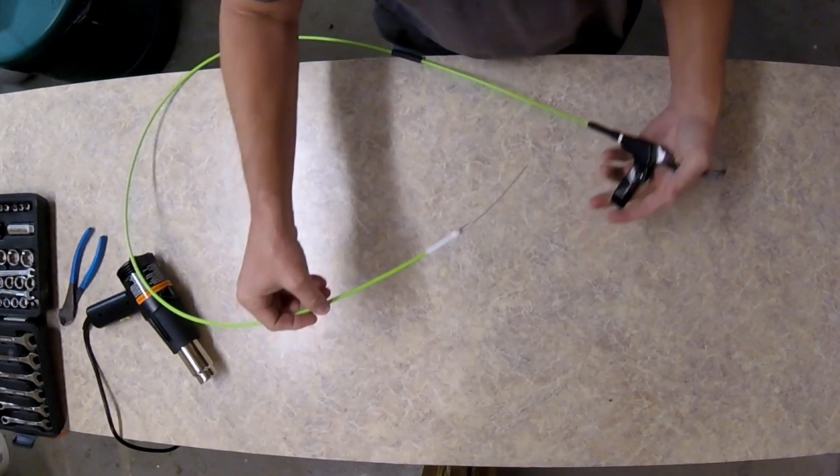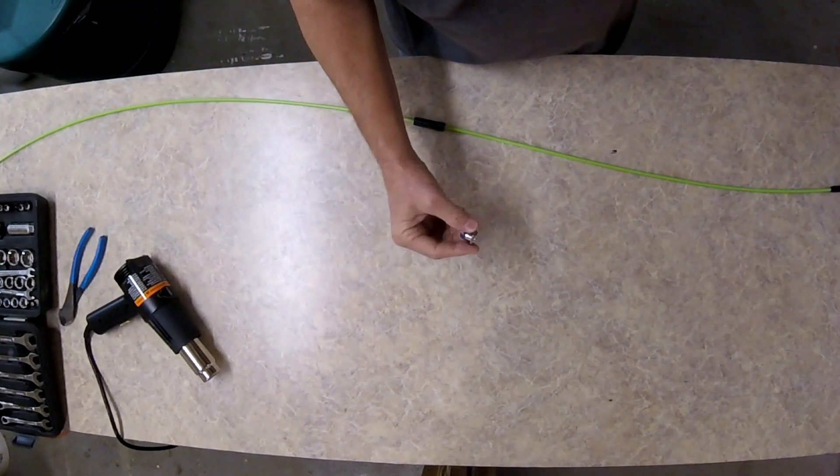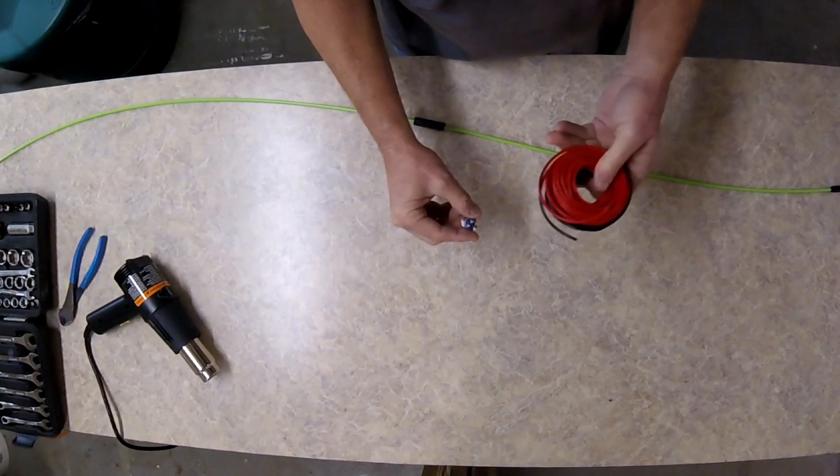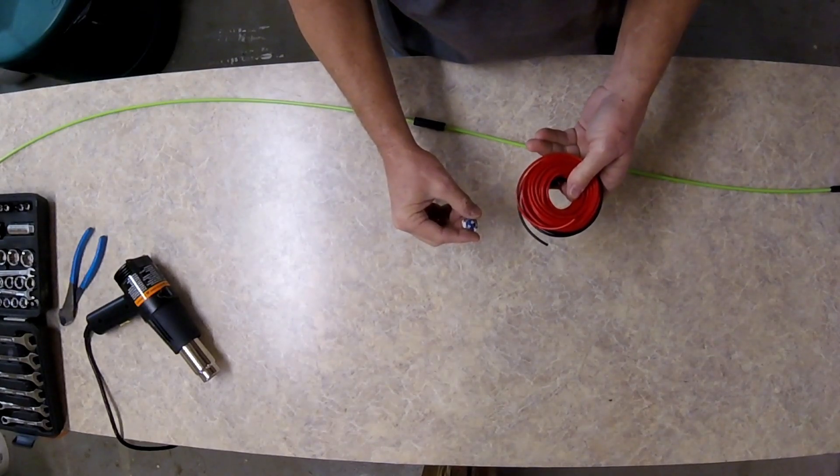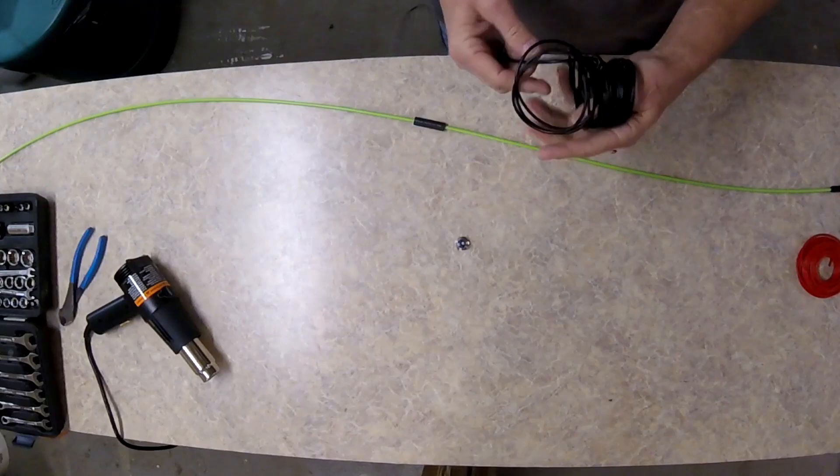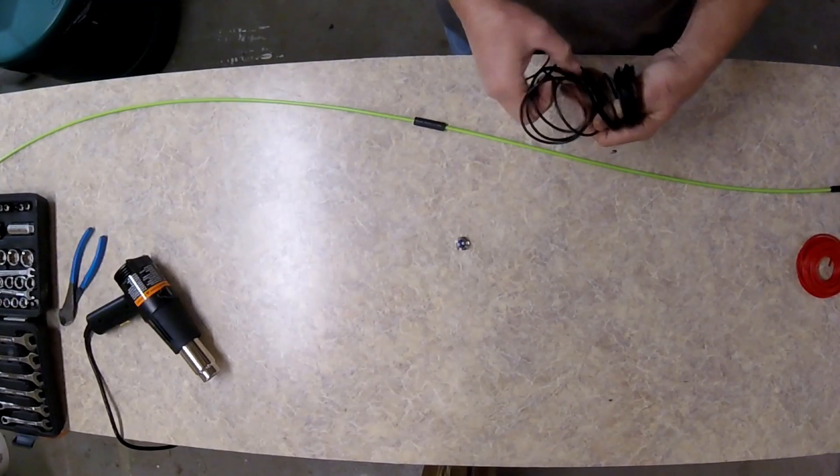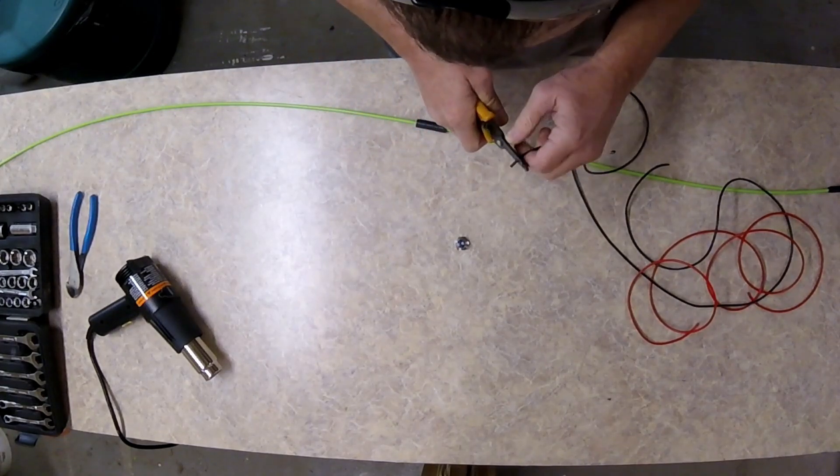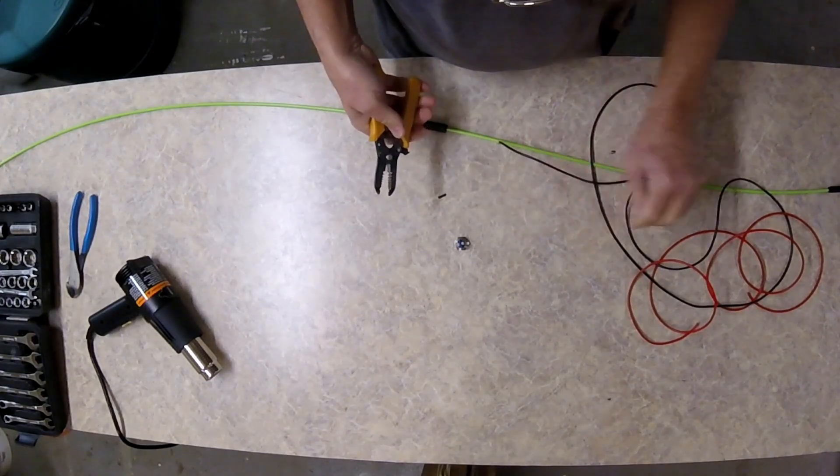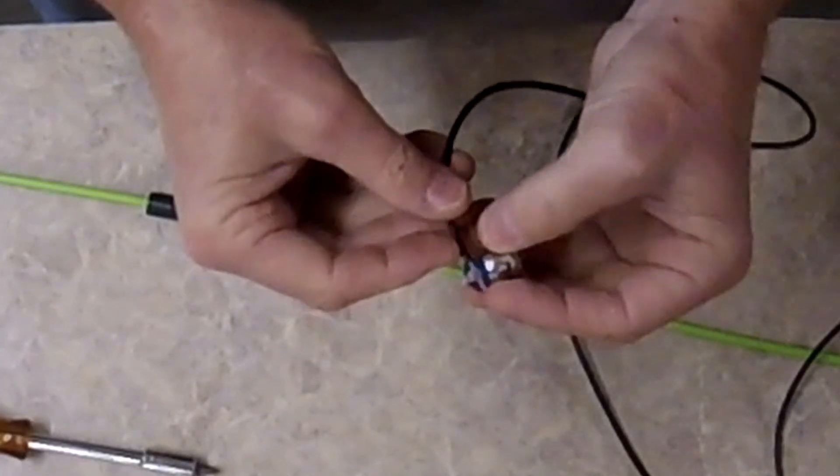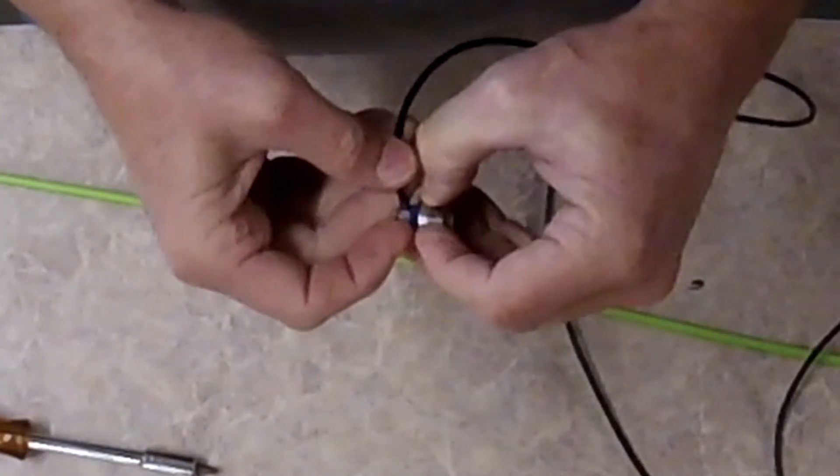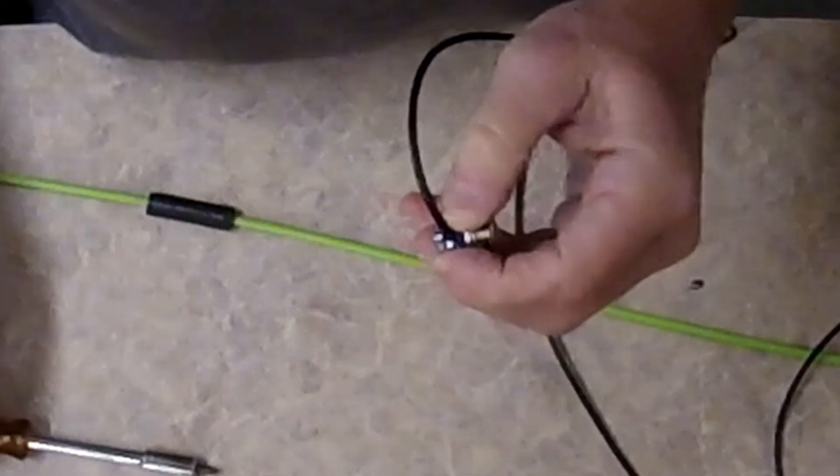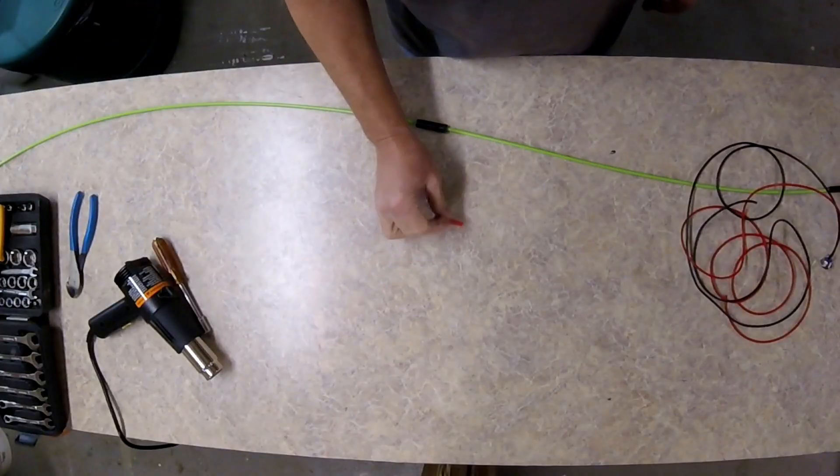Now let's work on the kill switch. Our kill switch is meant to accommodate 16 gauge wire, so that's what we have here. We're going to get enough wire to be just about as long as our throttle. Get our wire strippers, about 3/8 of an inch. Another piece of heat shrink.